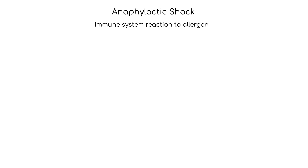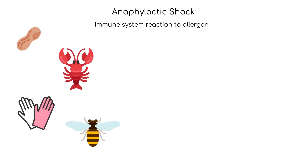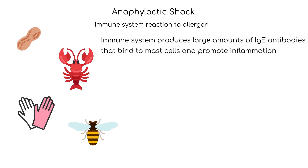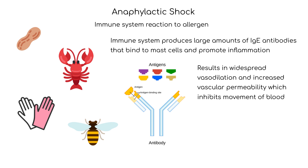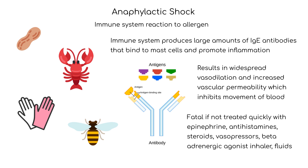Anaphylactic shock is an immune system reaction to an allergen such as peanuts, shellfish, latex, and insect stings. The immune system produces large amounts of IgE antibodies that bind to mast cells and promote the release of inflammatory cytokines. This results in widespread vasodilation and increased vascular permeability, which inhibits movement of blood. Anaphylactic shock can occur rapidly, and death can occur within minutes if not treated.